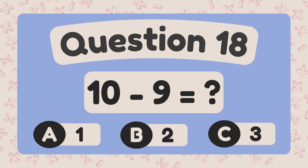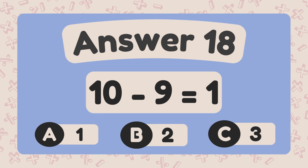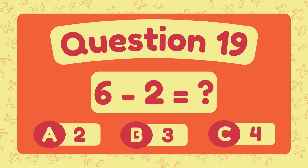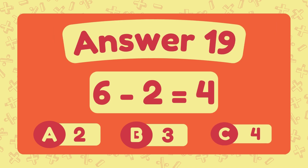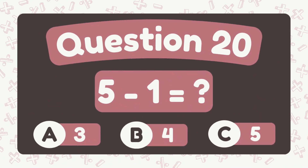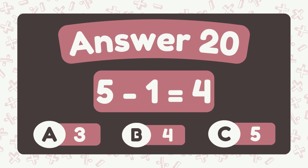What is 10 minus 9? The answer is 6 minus 6 minus 6. What is 6 minus 2? The answer is 4. What is 5 minus 1? The answer is 4.